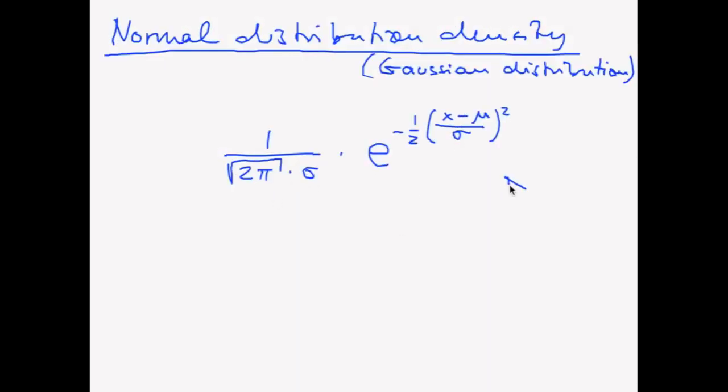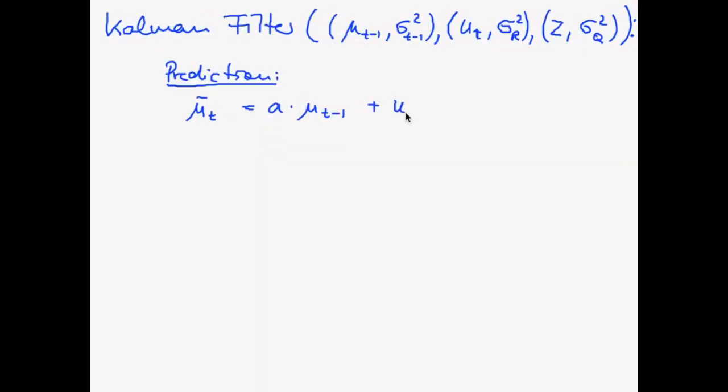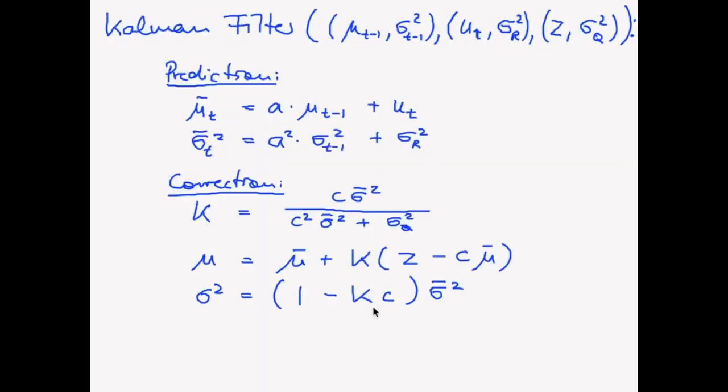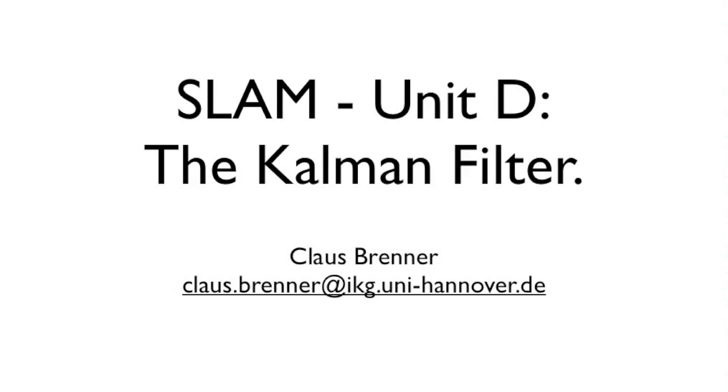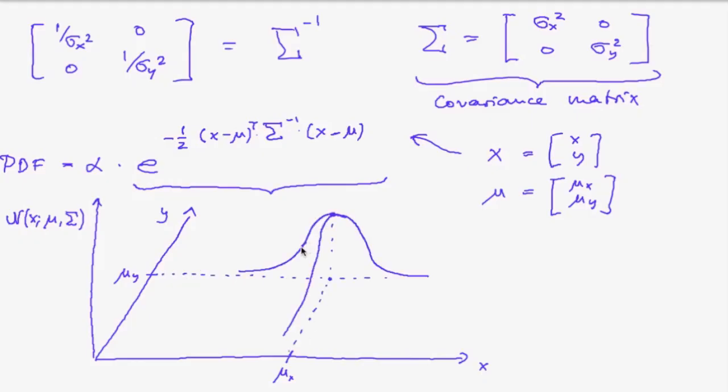We then have a look at what happens if we use a specific probability distribution, namely the Gaussian or normal distribution, and derive the so-called Kalman filter for the one-dimensional case.